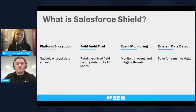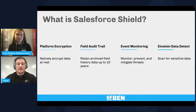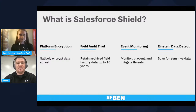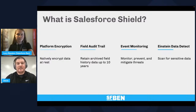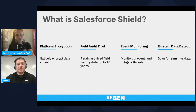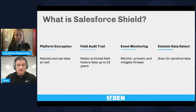Lastly, Einstein Data Detect has been added fairly recently as another component of Shield, included with your Shield license. What Einstein Data Detect does is automatically scan for sensitive data — certain patterns like credit card numbers, email addresses, social security numbers — and then shows you where you might have that within your Salesforce org. Know that each individual component can be licensed by itself, or the full umbrella can be purchased. You have both of those options.